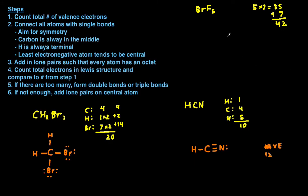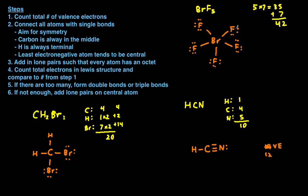Step two: connect all the atoms with single bonds, aiming for symmetry. We put bromine in the middle and attach the five fluorines to the bromine with single bonds. Next step: fill in lone pairs so that everything has an octet. Each fluorine currently only has two electrons, so we add six to each to give them eight. Looking at bromine, it currently has ten electrons around it — two, four, six, eight, ten.